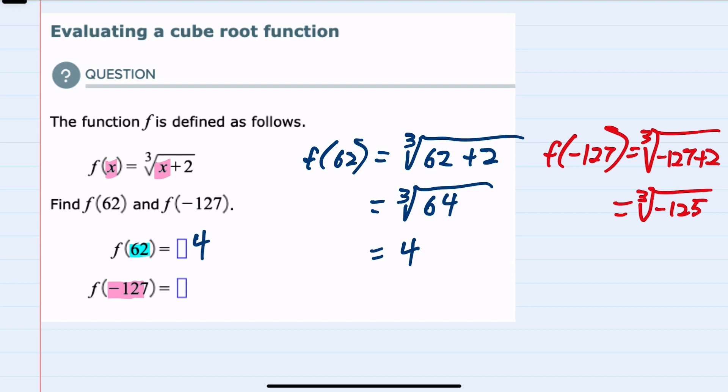And again, for the cube root of negative 125, what number written three times and multiplied would give me negative 125? That would be negative 5.